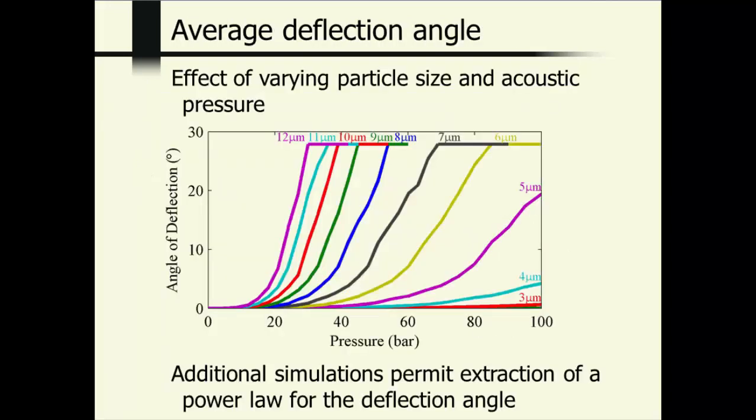So what we can do is we can do those simulations many times for different particle diameters. By the way, these are all assumed to be polystyrene particles for different acoustic pressure. And we can compute the angle of deflection at the end of the channel. So this is not following the individual undulations, but we're computing the entire change as it flows from one end of this four millimeter channel to the other.